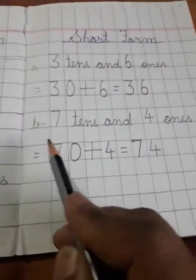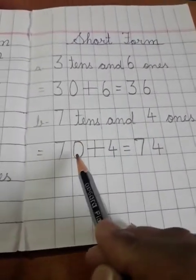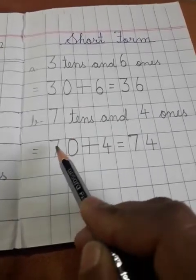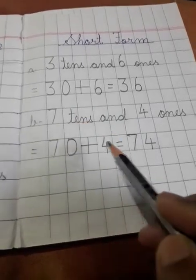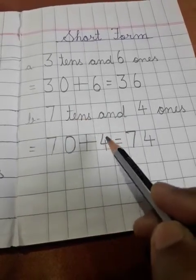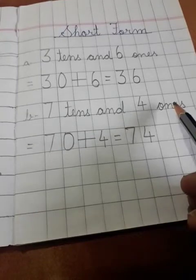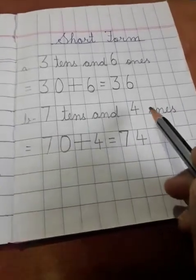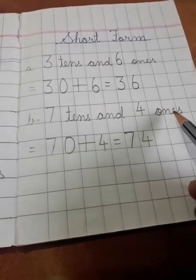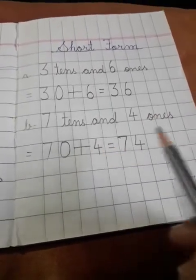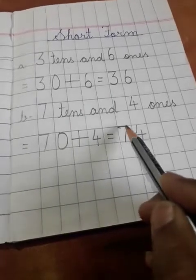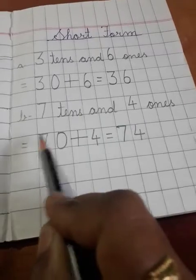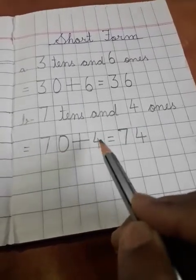Next example. 70 plus 4. Again, 7 is representing for tens and 4 is representing for ones. So 7 tens means 70, and 4 is a lone number, so 4 is written here only. So we can say that 74 is the short form of 70 plus 4.